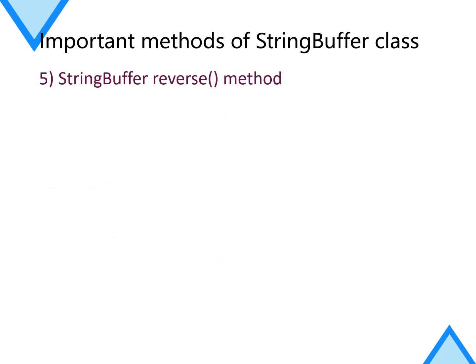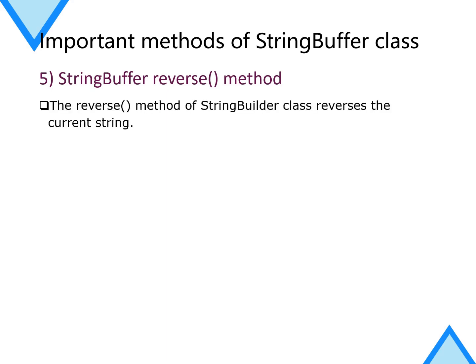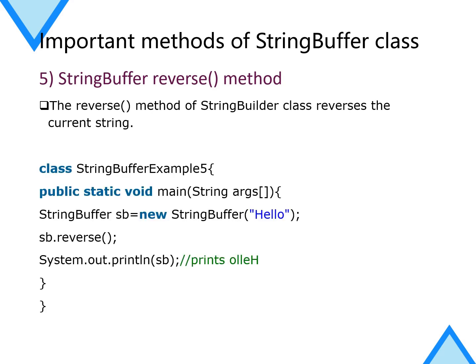The fifth method is reverse(). As the name implies, it reverses the current string. For example, we have a StringBuffer object sb initialized with 'hello', and we call the reverse() method on it. It will reverse the string and print 'o', 'l', 'l', 'e', 'h' — that is, 'olleh'.